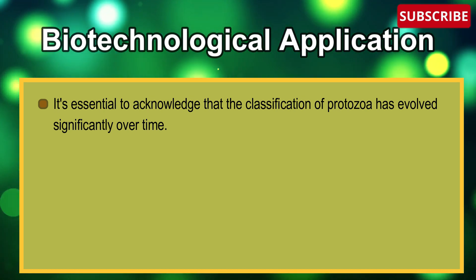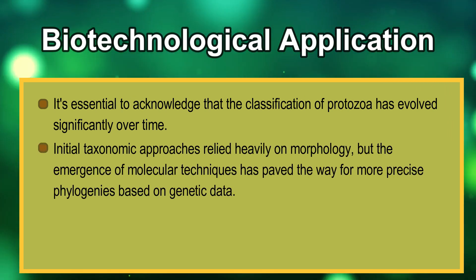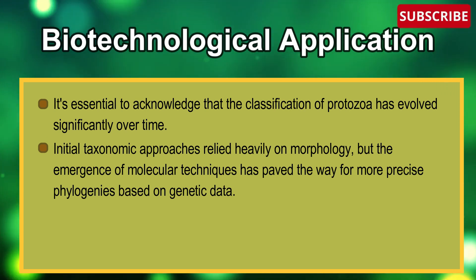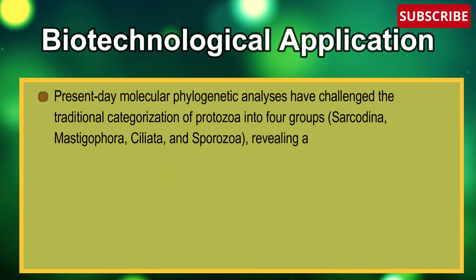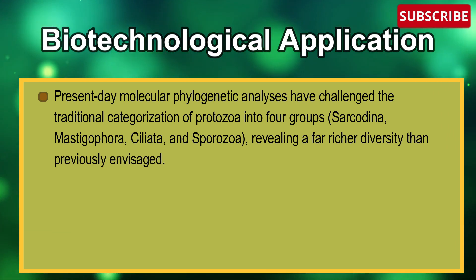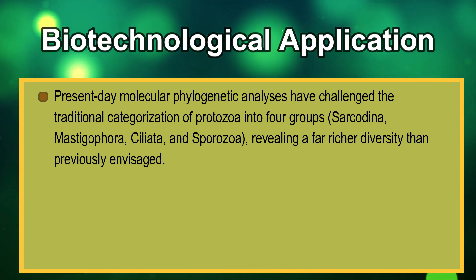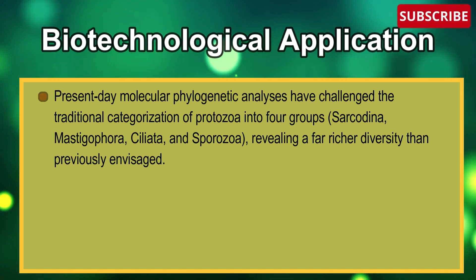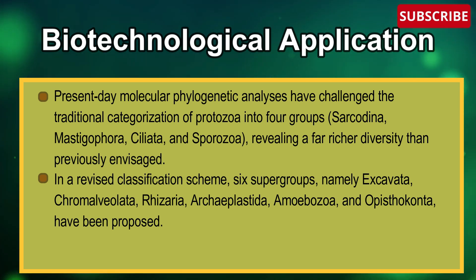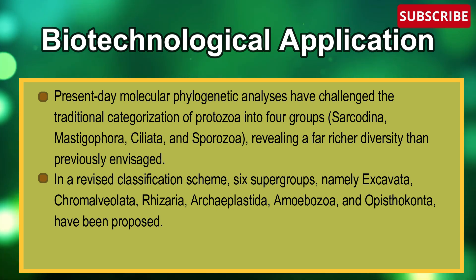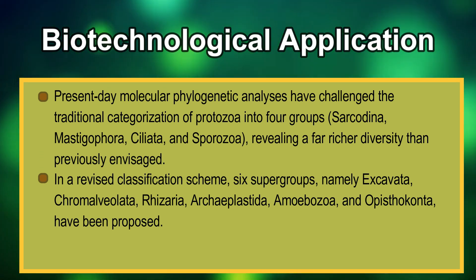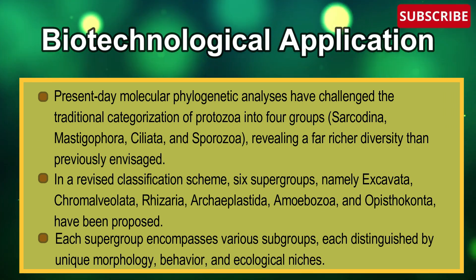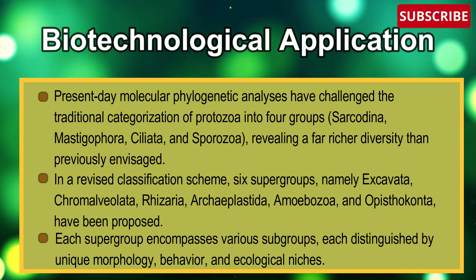To conclude: it's essential to acknowledge that the classification of protozoa has evolved significantly over time. Initial taxonomic approaches relied heavily on morphology, but the emergence of molecular techniques has paved the way for more precise phylogenies based on genetic data. Present-day molecular phylogenetic analyses have challenged the traditional categorization of protozoa into four groups — Sarcodina, Mastigophora, Ciliata, and Sporozoa — revealing far richer diversity. In a revised classification scheme, six supergroups named Excavata, Chromalveolata, Rhizaria, Archaeplastida, Amoebozoa, and Opisthokonta have been proposed, each encompassing various subgroups distinguished by unique morphology, behavior, and ecological niche.